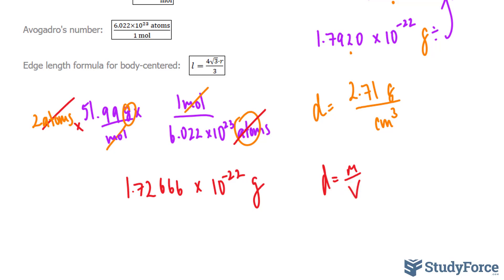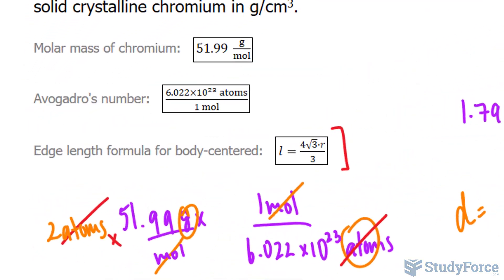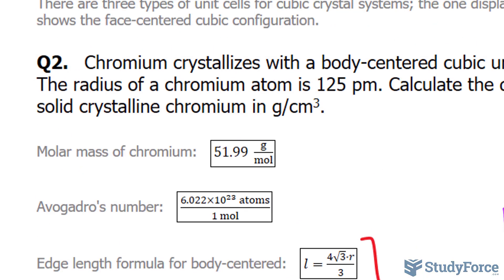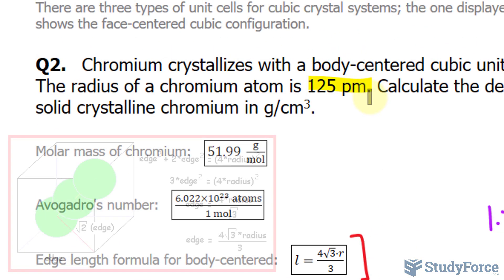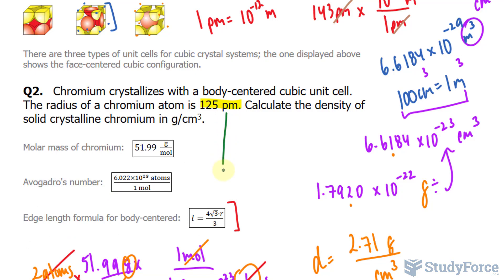Now we need to find the volume, since density is mass per volume. We use the formula for the edge length of a BCC unit cell: a = 4r√3 / 3. They've given us the radius, and an illustration of how this formula is derived is shown on screen. We'll convert the radius into meters and substitute it into the formula.